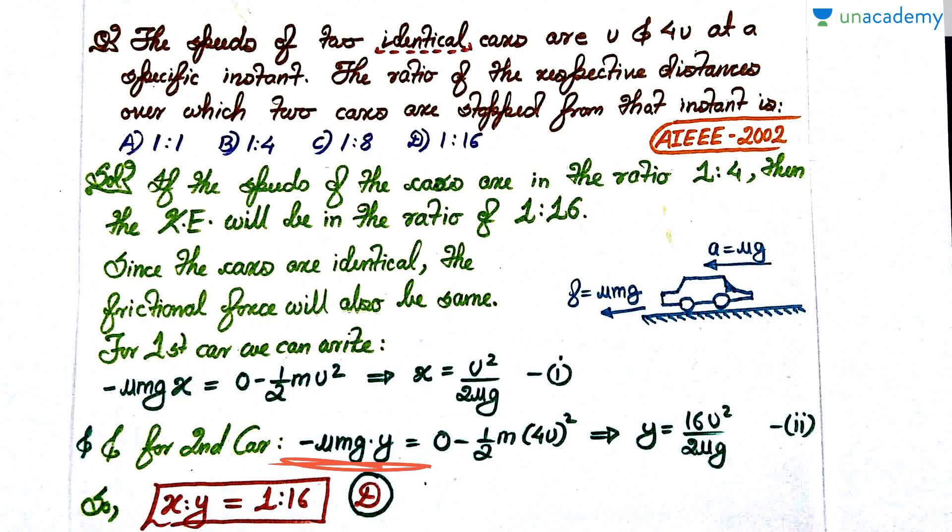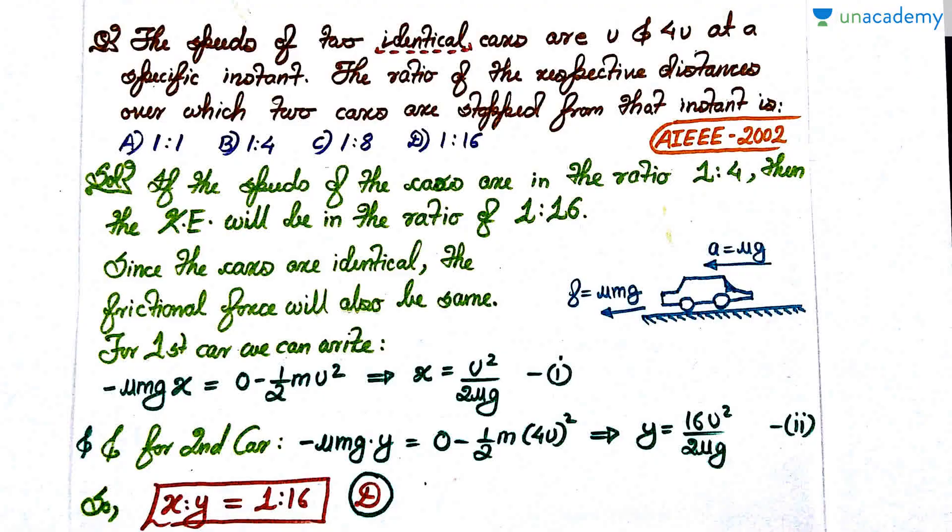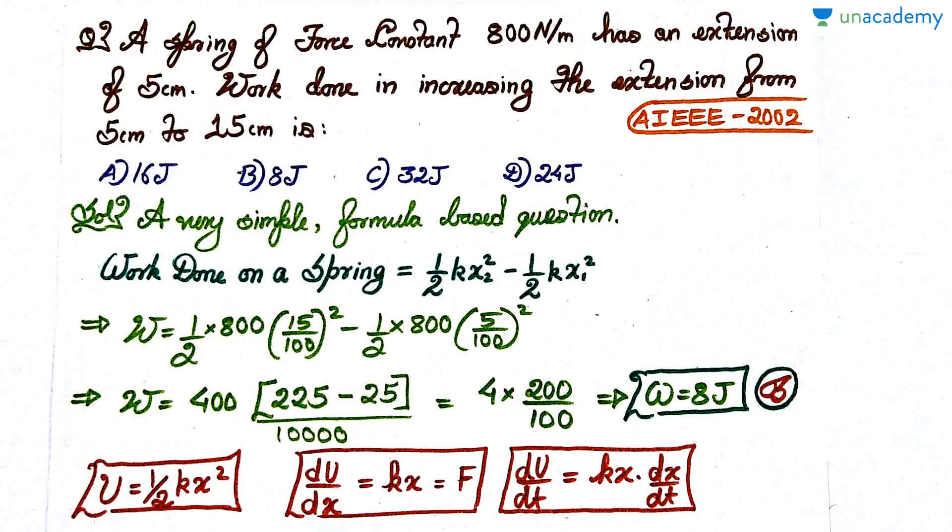For the second car, I assume that it travels the distance y. So -μmgy equals final kinetic energy zero minus initial kinetic energy. In initial kinetic energy the velocity is 4U. When I solve that I get y equals 16u² by 2μg. If I compare x and y, then the ratio of x is to y is actually 1 is to 16. Option D is the correct answer.